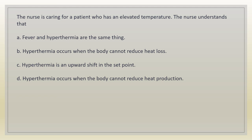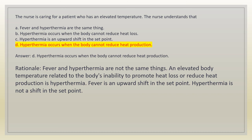The nurse is caring for a patient who has an elevated temperature. The nurse understands that: A. fever and hyperthermia are the same thing. B. hyperthermia occurs when the body cannot reduce heat loss. C. hyperthermia is an upward shift in the setpoint. D. hyperthermia occurs when the body cannot reduce heat production. Answer: D. Rationale: fever and hyperthermia are not the same things. An elevated body temperature related to the body's inability to promote heat loss or reduce heat production is hyperthermia. Fever is an upward shift in the setpoint. Hyperthermia is not a shift in the setpoint.